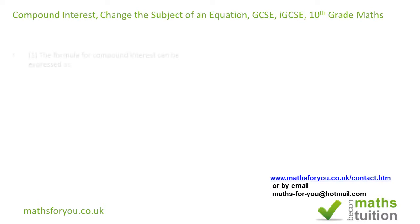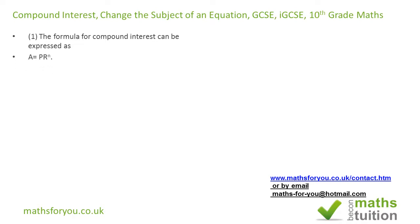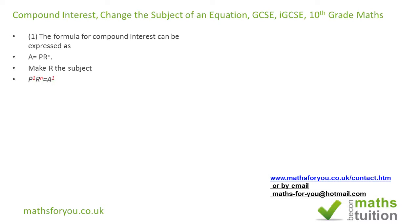The first question says: the formula for compound interest can be expressed as A is equal to P times R raised to the power N. It then says: make R the subject. What I'm going to do is rearrange this — putting R on the left-hand side and A on the right-hand side.